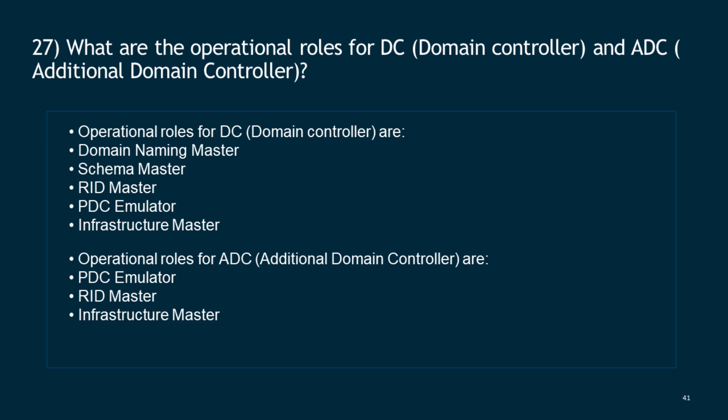Question 27: What are the operational roles for DC and ADC? Operational roles for DC (Domain Controller) are: Domain Naming Master, Schema Master, RID Master, PDC Emulator, and Infrastructure Master. Operational roles for ADC (Additional Domain Controller) are: PDC Emulator, RID Master, and Infrastructure Master.